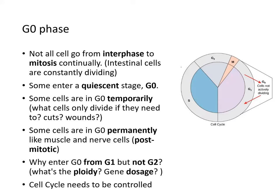Not all cells go from interphase to mitosis continually. Intestinal cells and liver cells do, but post-mitotic cells like muscle cells and brain cells go into a quiescence stage, or G0.